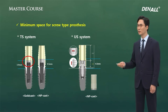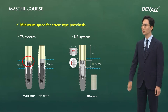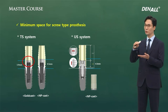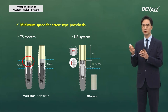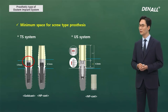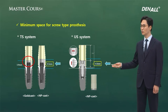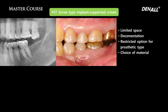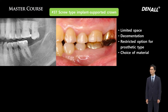The TS system and US system use screw type and can deliver prostheses in limited space. On top of the screw head, materials like one-seal are used to fill the screw hole. In these systems, at least 4.5 mm of space is required. If the amount of space is limited, this may not be enough for cementation type, but you can provide a prosthesis using screw type.